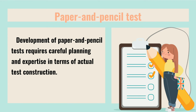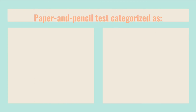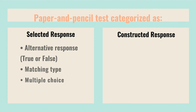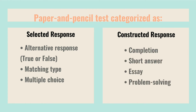The development of paper and pencil tests requires careful planning and expertise in terms of actual test construction. The more seasoned teacher can produce true or false items that can even test higher order thinking skills and not just rote memory learning. Essays are easier to construct than the other types of objective tests, but the difficulty in scoring essay examinations keeps teachers from using this form in actual practice. Paper and pencil tests categorize into selected response and constructed response. Under selected response: alternative response or true or false, matching type, and multiple choice. Under constructed response: completion, short answer, essay, and problem solving.